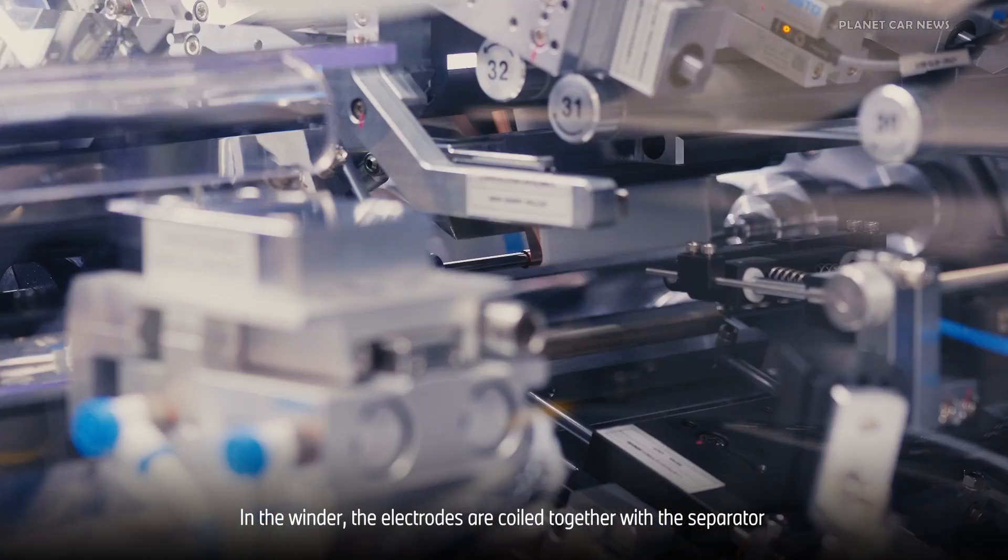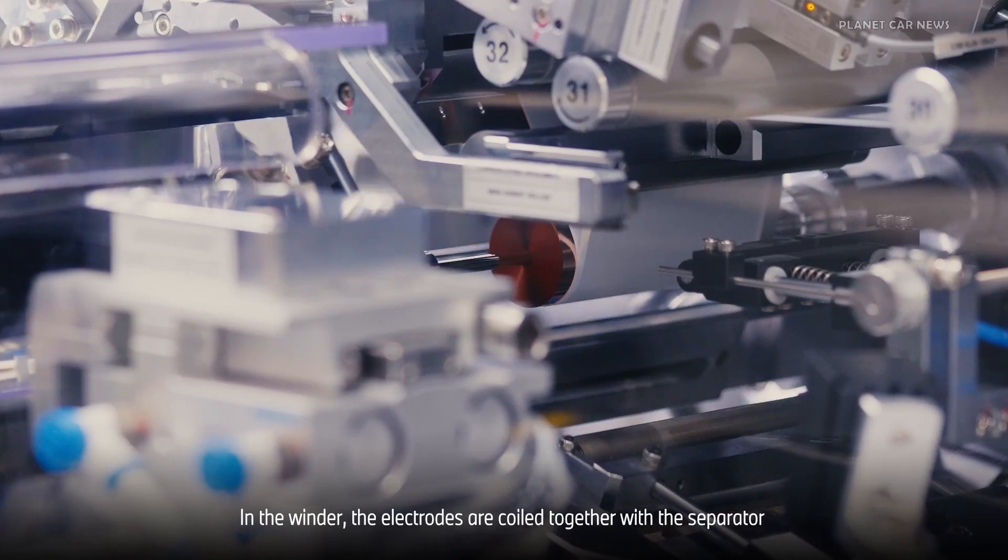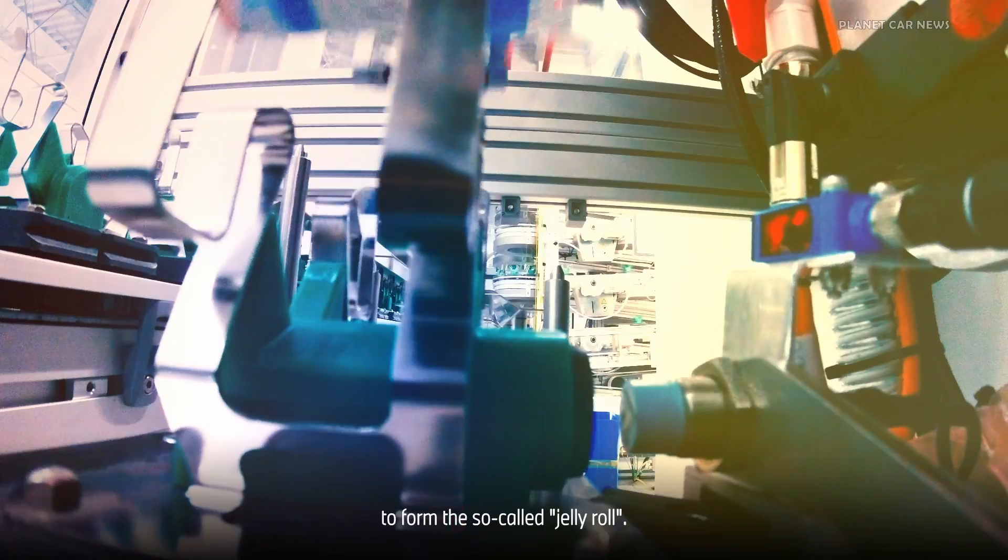In the winder, the electrodes are coiled together with the separator to form the so-called jelly roll.